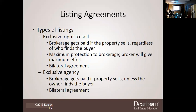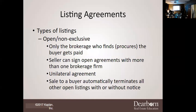These are the different types of listing agreements — there are going to be multiple types. I want to start with the open and non-exclusive listing. This open and non-exclusive listing is utilized only when a broker finds or procures the buyer — only then does the broker get paid. The seller can sign multiple open agreements with more than one brokerage. It's a unilateral agreement, and a sale to a buyer automatically terminates all other open listings with or without notice.